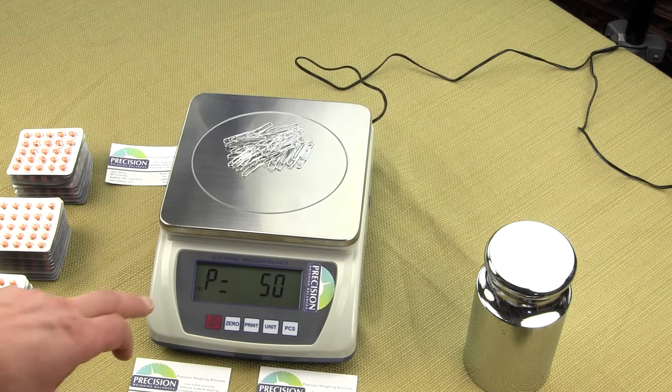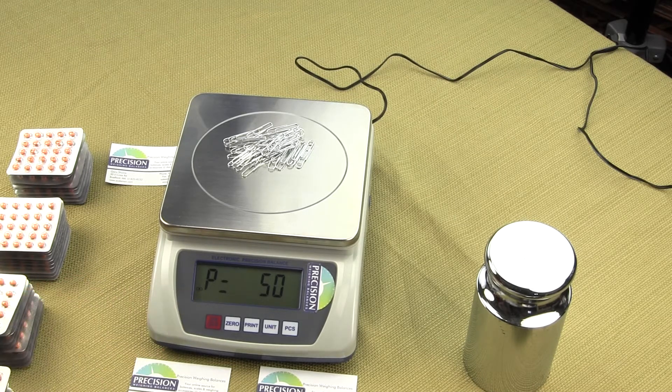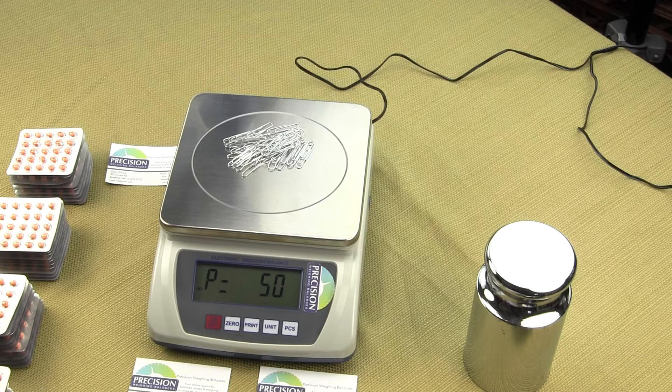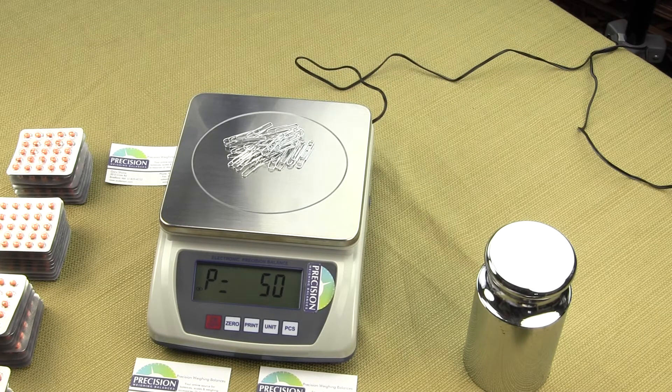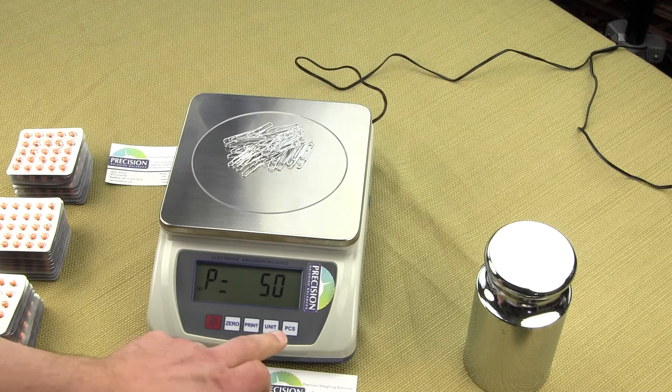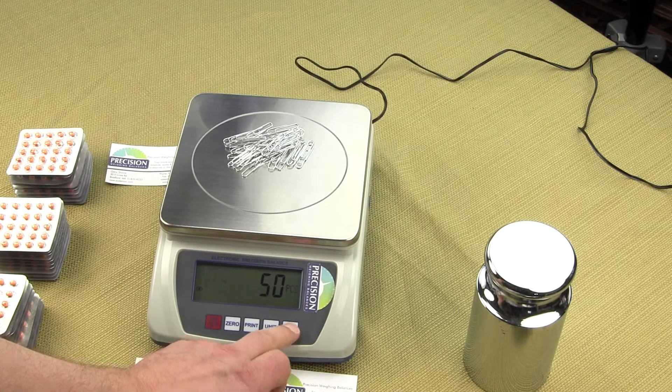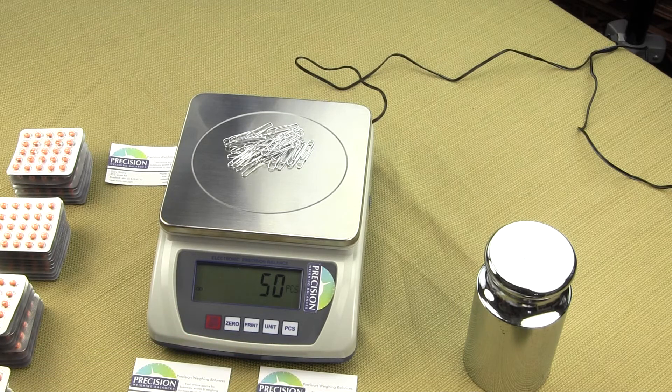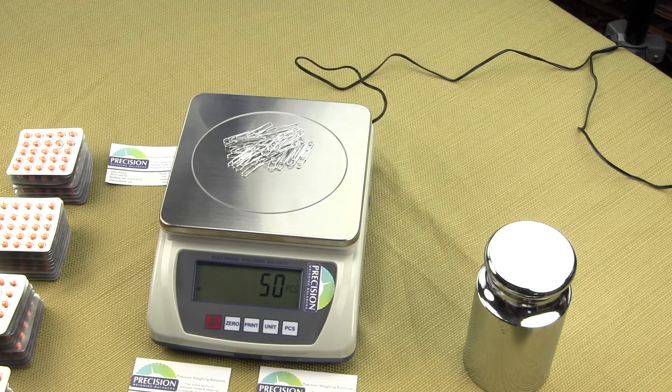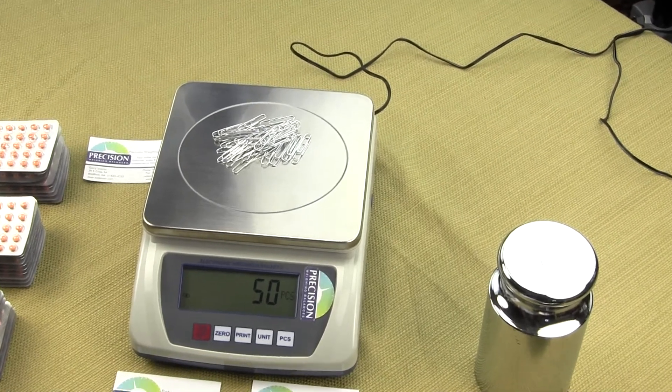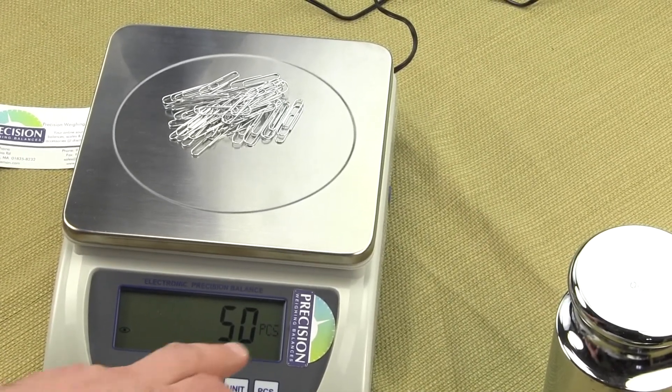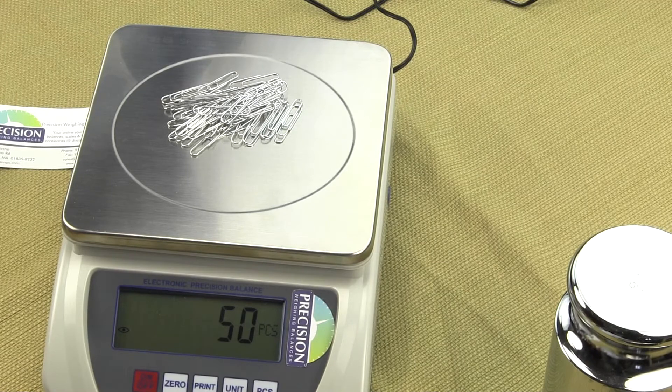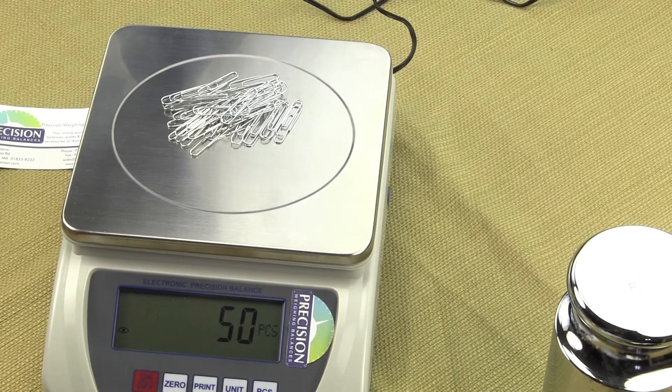Once the scale is stabilized, in the lower left-hand corner, you'll see this little circle figure, meaning you have stabilization. Press the PCS and you'll notice it now says 50 pieces. If you look at the display, it says PCS. So we have 50 pieces.